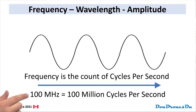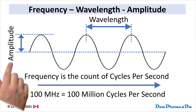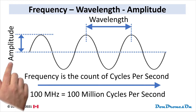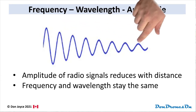So 100 megahertz, for example, means 100 million waves are received every second. Hertz, by the way, means cycles per second. The inverse of frequency is wavelength, which is the distance between the pond ripples, or the length of one of those radio wave cycles from peak to peak. Amplitude is simply the magnitude of those waves, indicative of signal strength, and it decreases with distance, whereas frequency and wavelength do not change with distance.